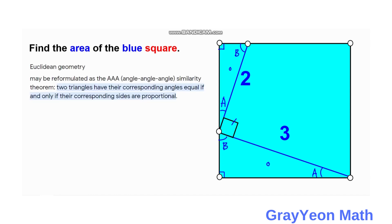By the Angle-Angle similarity theorem — actually this is the converse statement — two triangles have their corresponding angles equal if and only if their corresponding sides are proportional. In our case we have proved that the three corresponding angles are congruent, and therefore their corresponding sides are proportional by the Angle-Angle-Angle, or triple-A, similarity theorem.